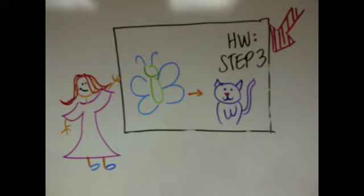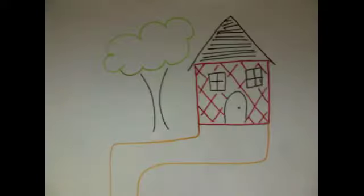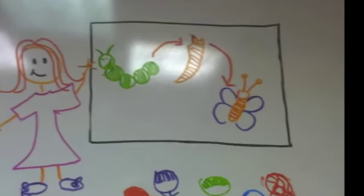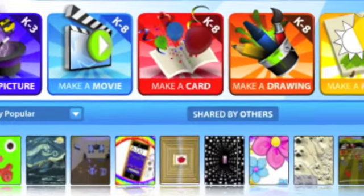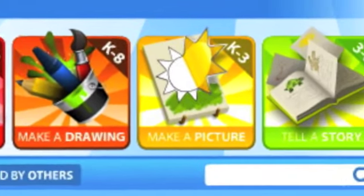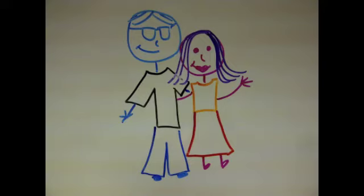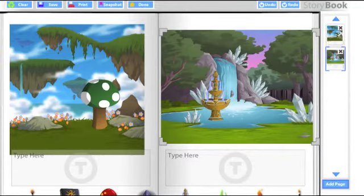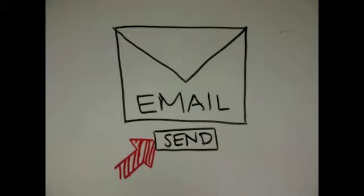I send all of the students home with the task of making a story about a butterfly. Throughout the story, the butterfly must go through all of the life cycles. They can do this by using the tell a story game on Kerpoof. I send a note home to their parents describing what the students must accomplish so the parents can help them. I also ask the students to email me their story before the start of the following school day.